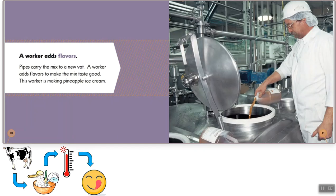A worker adds flavors. Pipes carry the milk to a new vat. A worker adds flavors to make the mix taste good. This worker is making pineapple ice cream. So our sequence of events now has four items: getting the milk, adding in sugar to make it sweet, heating it up, and then adding flavors in.